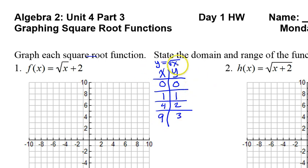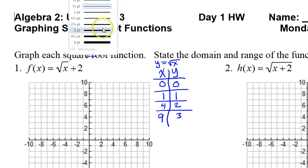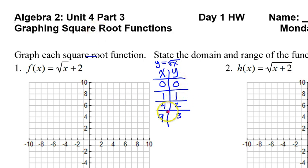Now, this is the parent function, square root of x, without the plus two part on it. So when I go to graph these points, I'm just going to plot them. I call it a skeleton. I'm not going to connect the dots. So there's my (0,0), (1,1), (4,2), (9,3). There's my skeleton of the parent function.